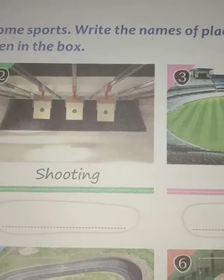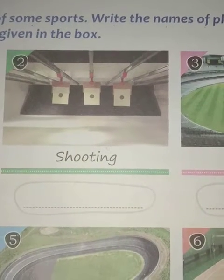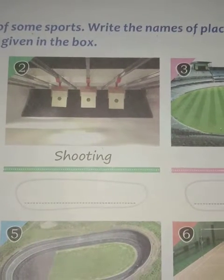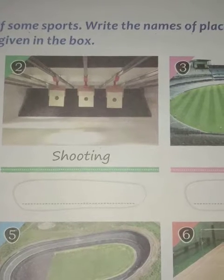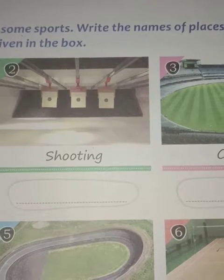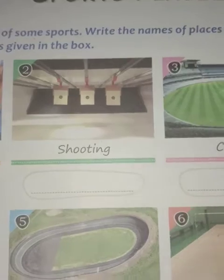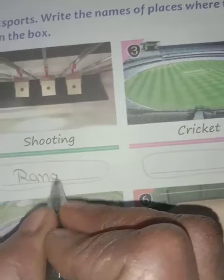Second is shooting. Shooting is the act or process of discharging a projectile from a ranged weapon. Shooting as a sport demonstrates the accuracy and speed of the shooter in aiming at targets using guns like pistols and rifles. Where is shooting played? The answer is range — R-A-N-G-E.